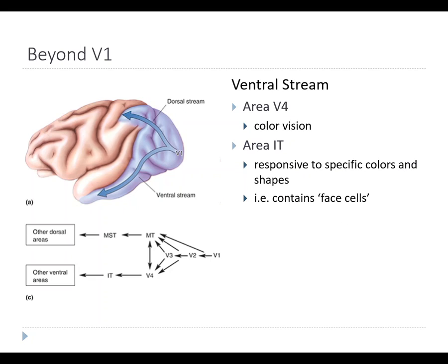The ventral stream includes area V4, which is important for color vision — many color and wavelength-sensitive cells are located there. The inferior temporal lobe also has color-sensitive cells, and area IT contains cells with very selective receptive fields for shape and objects, such as cells that prefer circles or triangles. In humans and primates, area IT contains face cells — neurons that respond very specifically to faces. Damage to this region can cause face blindness, where people have trouble recognizing faces.